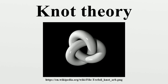Two knots can be added by cutting both knots and joining the pairs of ends. The operation is called the knot sum, or sometimes the connected sum or composition of two knots. Consider a planar projection of each knot where the projections are disjoint. Find a rectangle in the plane where one pair of opposite sides are arcs along each knot while the rest of the rectangle is disjoint from the knots. Form a new knot by deleting the first pair of opposite sides and adjoining the other pair of opposite sides. This ambiguity in the sum can be eliminated by regarding the knots as oriented — having a preferred direction of travel — and requiring the arcs are oriented consistently with the oriented boundary of the rectangle. The knot sum of oriented knots is commutative and associative.